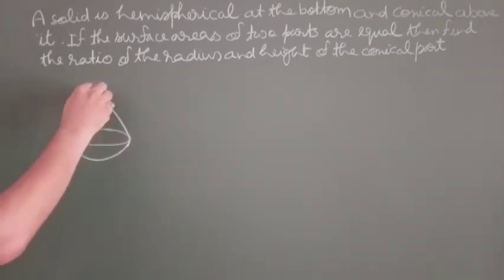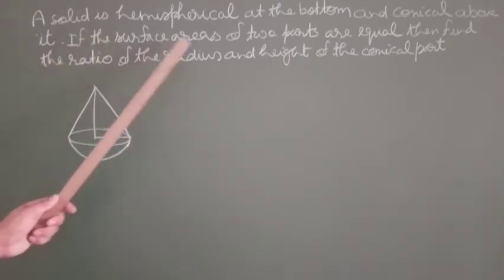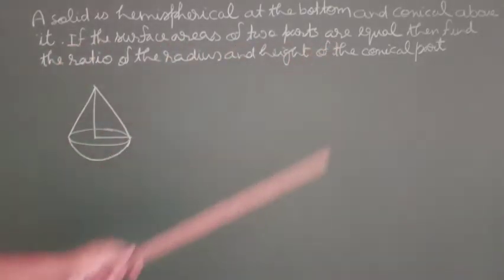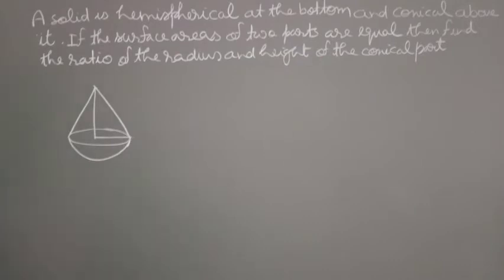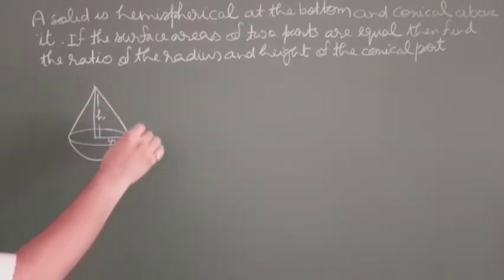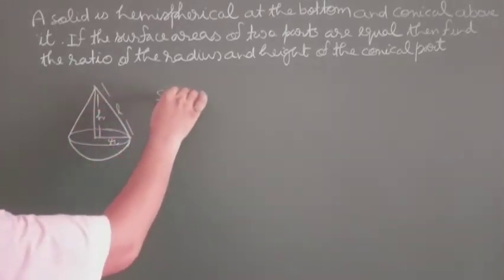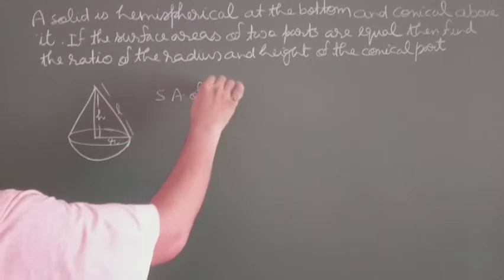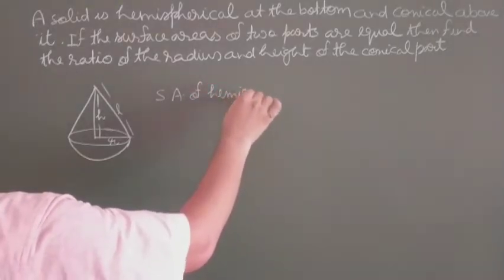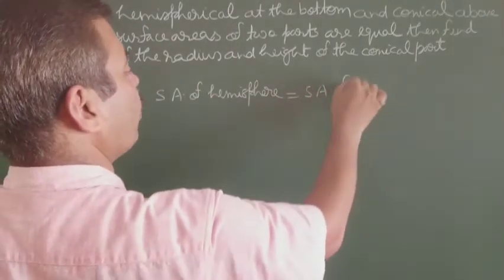Okay. Radius r, height of cone h — this is the height. Surface area of hemisphere equals surface area of cone. If the surface areas of both parts are equal, their surface areas are equal.